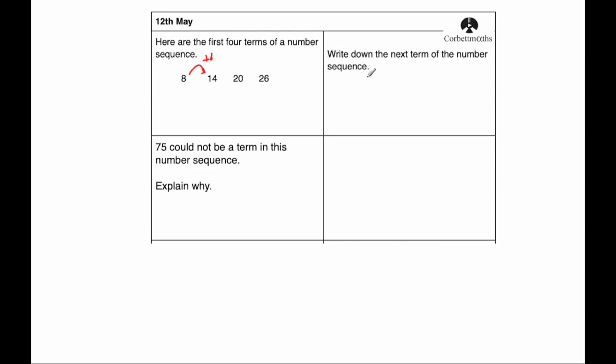And it says write down the next term of the number sequence. We just need to add a number 6. So 26 plus 6 would be equal to 32. So the next term in the sequence would be 32.